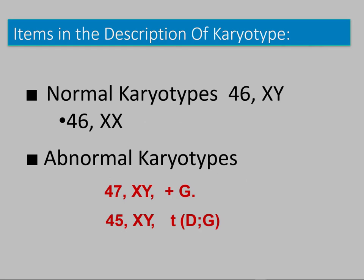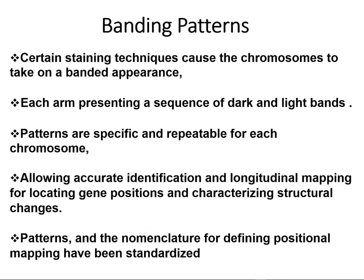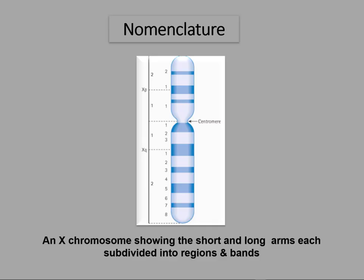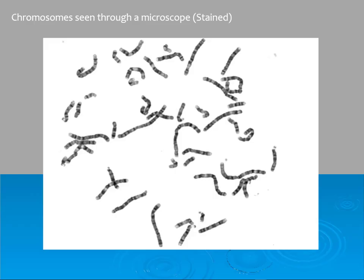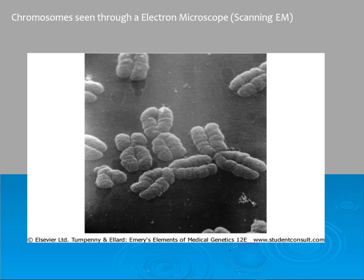A typical normal karyotype has 46 chromosomes — X and Y for male, XX for female. Abnormal ones are usually determined by the number of chromosomes. The banding patterns are unique: with the centromere and the banding patterns, we have the P and Q arms of the chromosome. The P arm is the top and the Q arm is the bottom. Karyotypists take this information and make sense of it, making recommendations to the doctor as to what the chromosomal aberration is, if there is one.